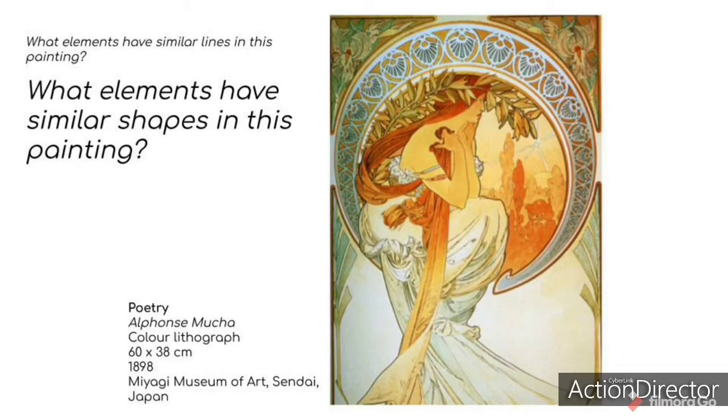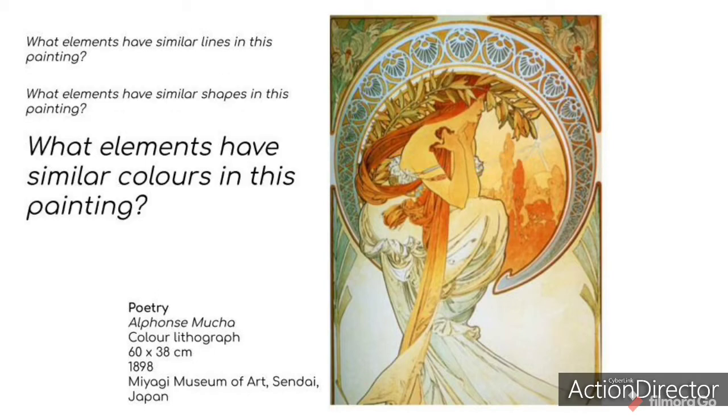What elements have similar shapes in this painting? I see very similar shapes in the leaves around her head. What elements have similar colors in this painting? I've spotted similar shades of orange in the background.